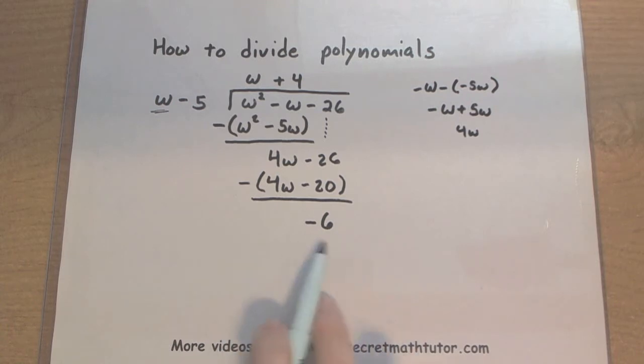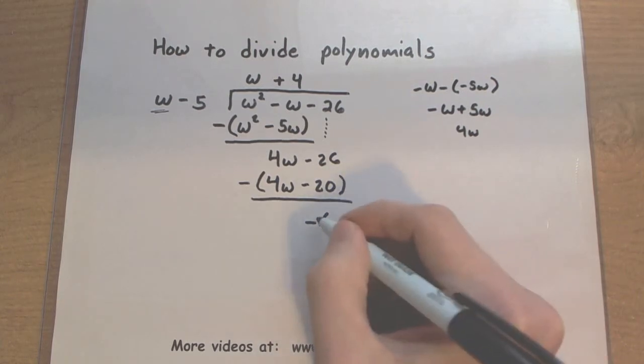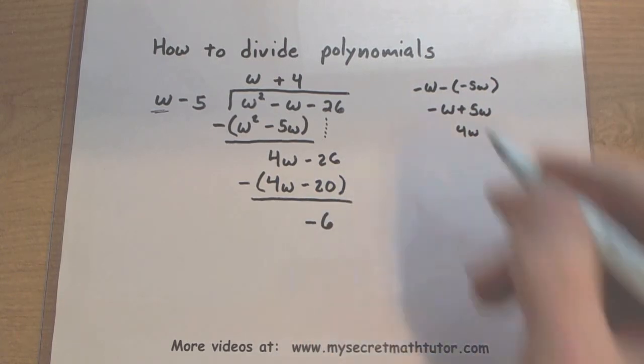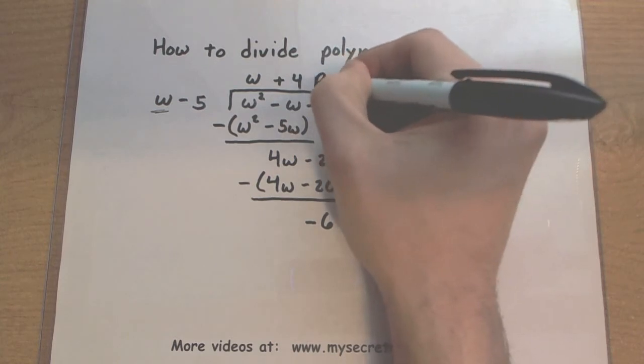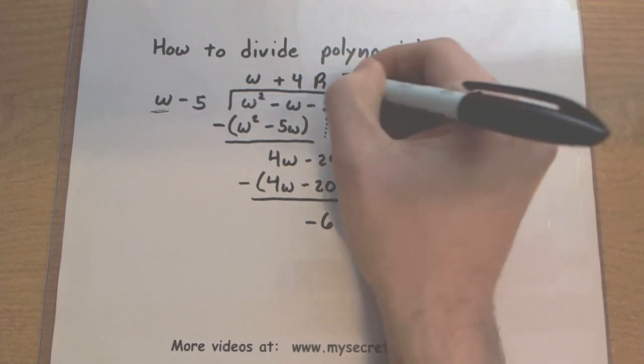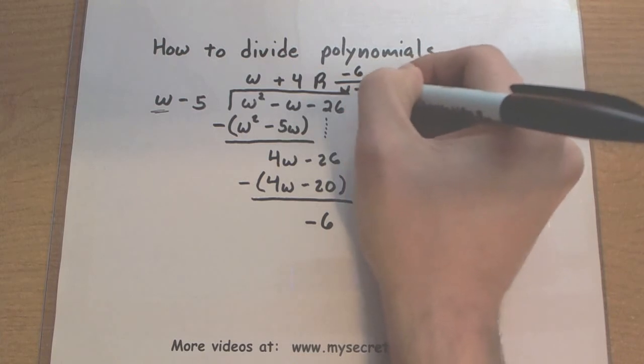Now when the power reduces to a smaller power than what you're actually dividing it by, you stop this process, and the negative 6 down here becomes our remainder.